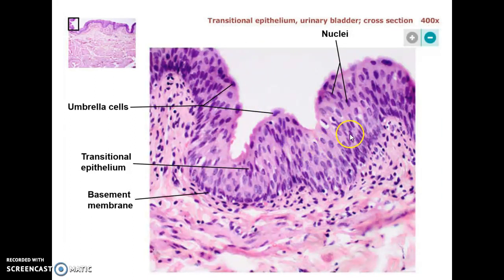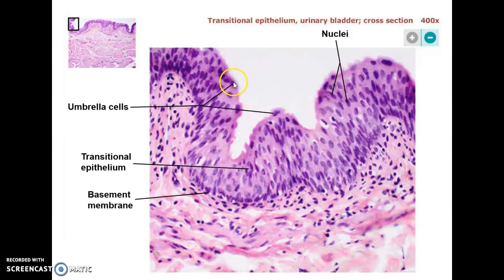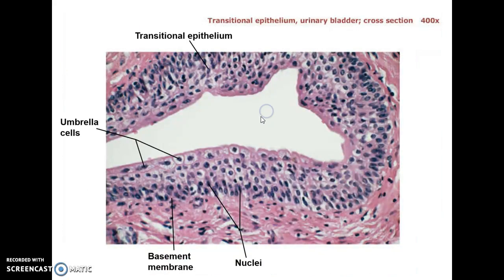As the bladder fills with urine in its interior, those cells are going to stretch out. That's why we call it transitional — until you have only a layer of two or three cells thick, but it's still going to maintain that perfect seal so that the urine is held inside the bladder. You can see those little umbrella cells, as they're called on the surface, that maintain that nice seal on the inner surface of the bladder.